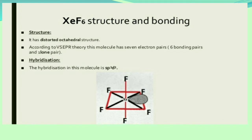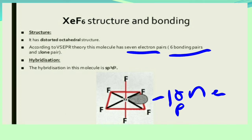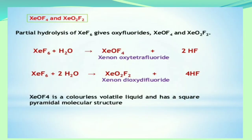XeF6 has a distorted octahedral structure. It has six bonding pairs and one lone pair, giving seven electron pairs total. The hybridization of this molecule is sp3d3.